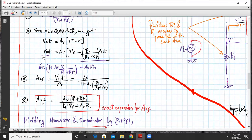We'll get this expression and finally AVF will be Vout upon Vin. We'll get the final expression as AV times AV divided by 1 plus AV times R1 upon R1 plus RF.